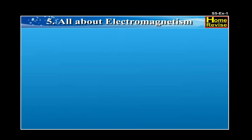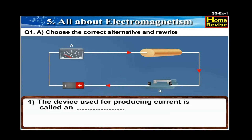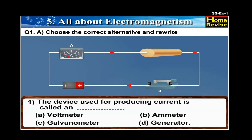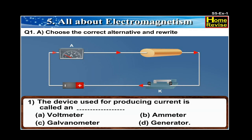Exercises Question 1A. Choose the most correct alternative and rewrite. 1. The device used for producing current is called a dash. A. Voltmeter. B. Ammeter. C. Galvanometer. D. Generator. The answer is: The device used for producing current is called a generator.